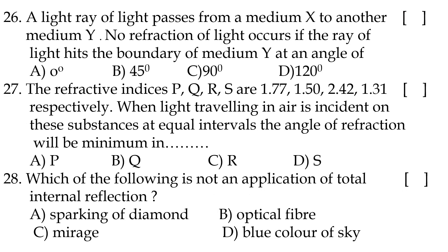Twenty-sixth question: a light ray passes from medium X to medium Y; no refraction occurs if the ray hits the boundary at an angle of C, 90 degrees. Twenty-seventh question: the refractive indices P, Q, R, S are 1.77, 1.50, 2.42, 1.31 respectively; when light traveling in air is incident at equal angles, the angle of refraction will be minimum in option D.